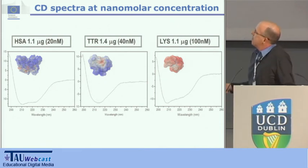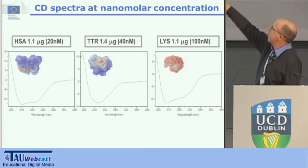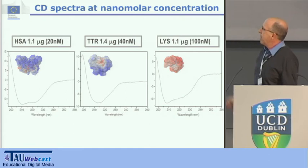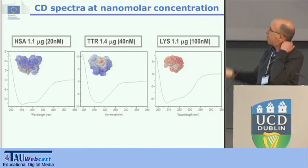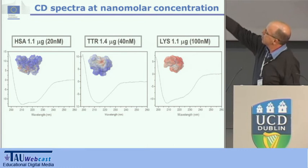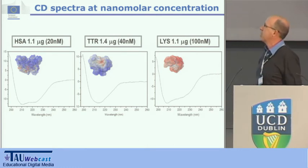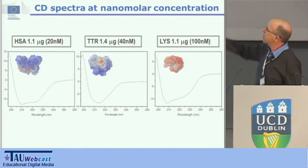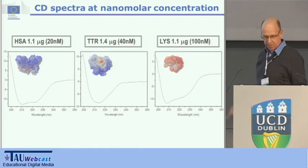Here are example spectra of three different proteins: human serum albumin, human transthyretin, and human lysozyme, measured with a little more than one microgram of sample, corresponding to 20 nanomolar concentration for human serum albumin. As you can see, it's a typical alpha-helical protein and the spectrum is quite good. You can probably even go lower in concentration if you acquire more scans.